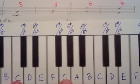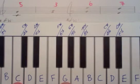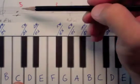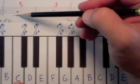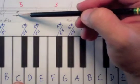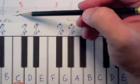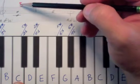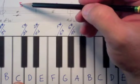Counting the half steps is a little bit different than counting the generic interval. If you remember, when we counted the generic interval, we start with the first note as one. So C is one, D is two, E is three, F is four, G is five. And that's how we get the generic interval.